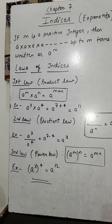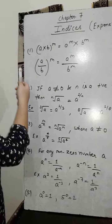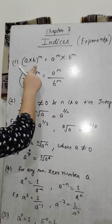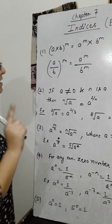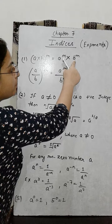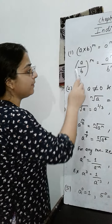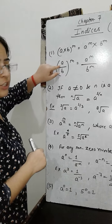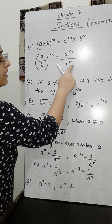These are some laws of indices which we apply in our exercises. Now let's see some more properties of indices. First: a into b, raised to the whole power m. Since a and b are connected with multiplication and the power m is given outside the bracket, this power applies to both. So it can be written as a raised to the power m into b raised to the power m. Similarly, a upon b raised to the whole power m equals a raised to the power m upon b raised to the power m.